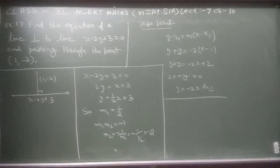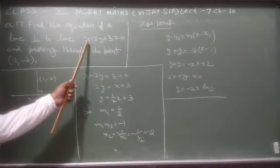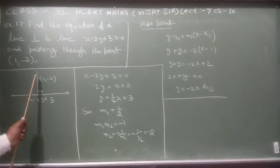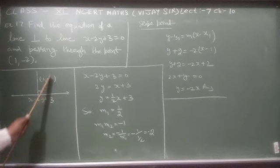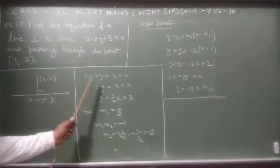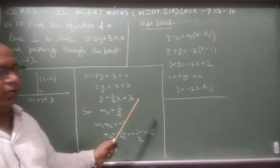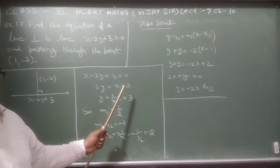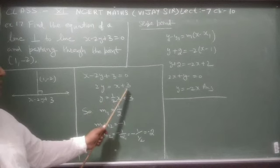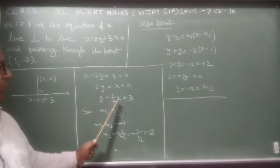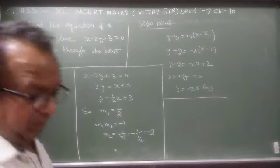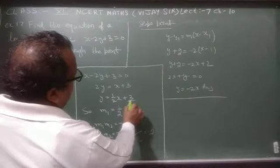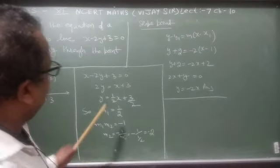हम roughly एक figure बनाते हैं। एक line दी हुई है जिसकी equation x - 2y + 3 = 0 है। इस line पर perpendicular एक और line है जो हमें find करनी है। दी हुई line को slope intercept form में convert करते हैं: 2y = x + 3, तो y = (1/2)x + 3/2। इसका slope = 1/2।